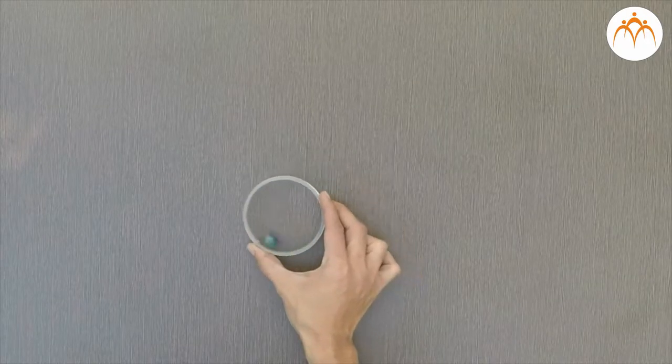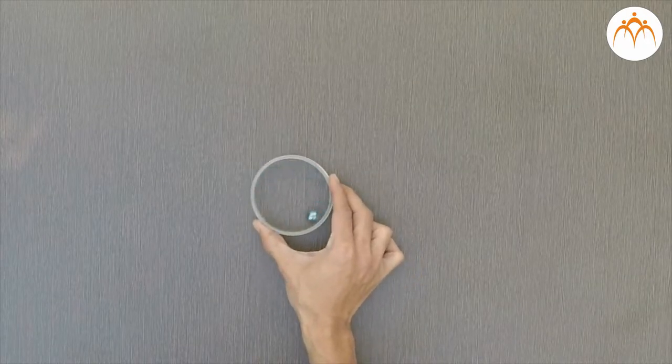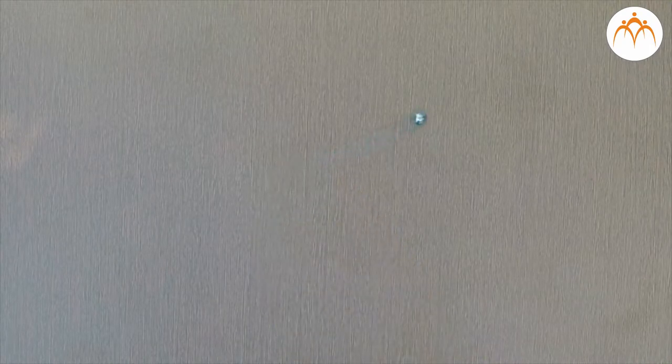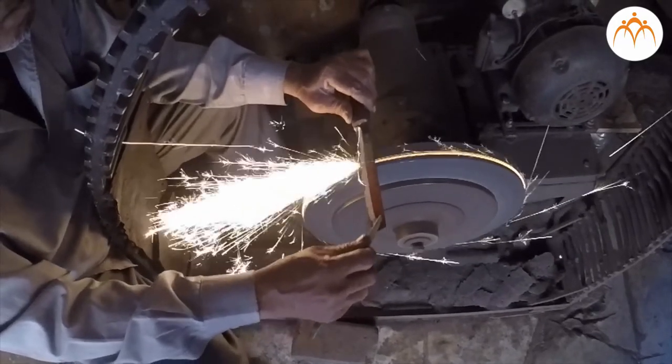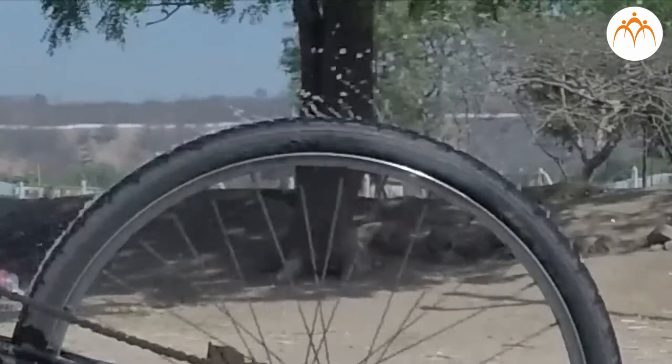This can be observed when outside barrier for marble in circular motion is removed. Sparks of grinding wheel. Water poured on the rotating wheel of bicycle.